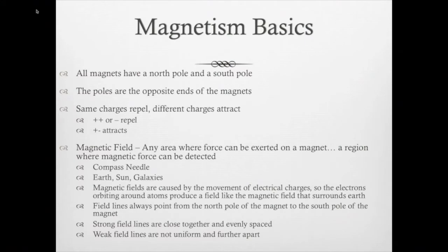First of all, all magnets have north and south poles. You should know this, and the poles are on the opposite ends of the magnets. If you break a magnet in half, you will still have a north and a south pole. You need to understand how charges work. If you have the same charges, they're gonna repel each other. If you have different charges, they're gonna attract each other.